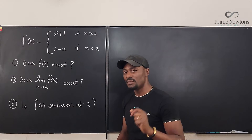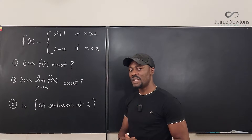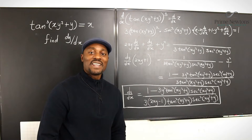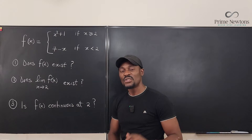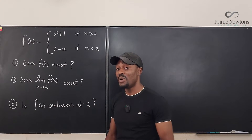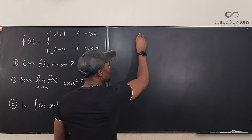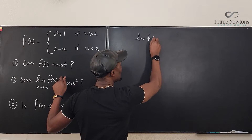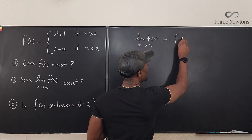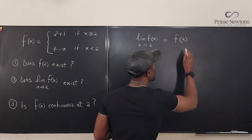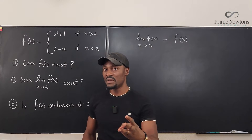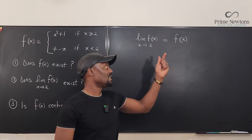The question is: is it continuous at 2? The answer to all of these questions comes down to this: the limit of this function as x approaches 2 is equal to the value of the function at 2. This is the answer to every single question here. There are three things that must happen for a function to be continuous at a point — in this case, at 2.